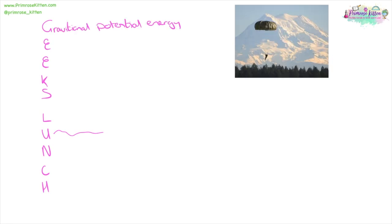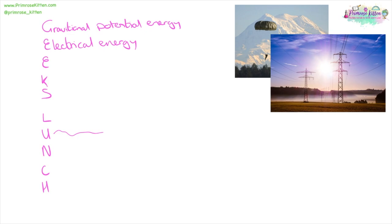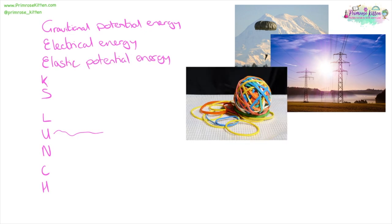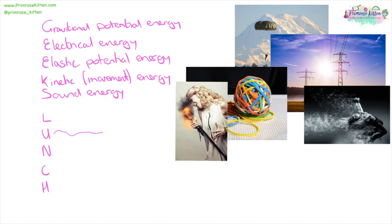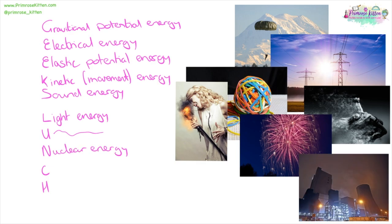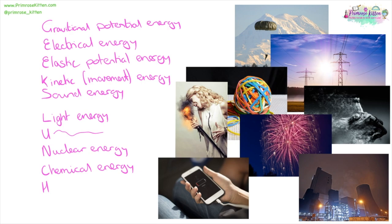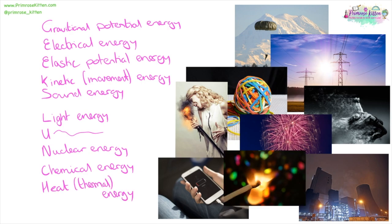The different types of energy can be remembered by using GEEK'S LUNCH: Gravitational potential energy, Electrical energy, Elastic potential energy, Kinetic energy, Sound energy, Light energy, Nuclear energy, Chemical energy (as in batteries or food), and Heat or thermal energy. In a phone, electrical energy goes in, chemical energy is stored, and then heat energy, light and sound energy come out. With a match, chemical energy is stored, kinetic energy is used to strike it, and then heat, light, and a bit of sound energy come out. With fireworks, stored chemical energy is transferred to kinetic energy as it moves up, then light, heat and sound as it explodes, then gravitational potential and kinetic energy as it falls.